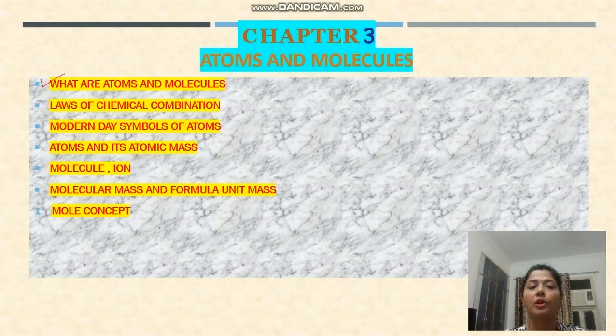The topics we will cover in this chapter are: what are atoms and molecules, laws of chemical combination, modern day symbols of atoms, atom and its atomic mass, molecule ion, molecular mass and formula unit mass, and lastly the mole concept.